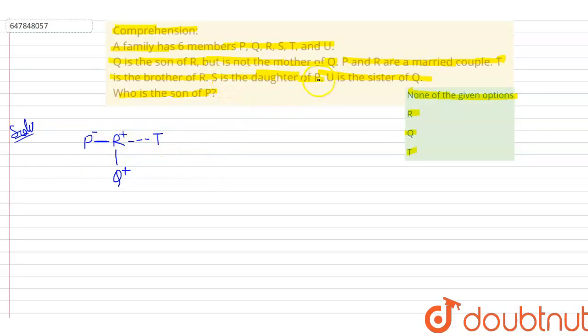S is the daughter of P. So S is the daughter. That means P and R, both are married couple, so both will have a daughter. Therefore she will become Q's sister.